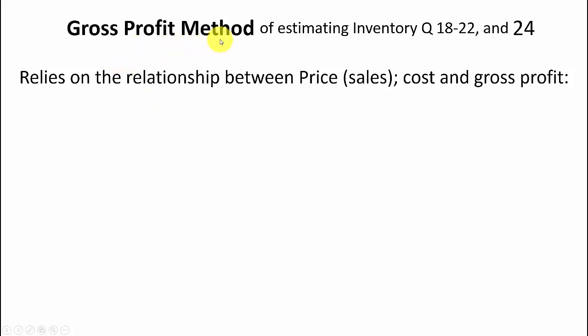Let's talk about the gross profit method of estimating inventory. That'll be questions 18 through 22 and 24, but I'm only going to do question 18, and you can do the rest on your own. Now, this gross profit method relies on the relationship between price or sales, cost of goods sold, and gross profit.